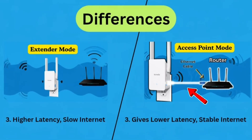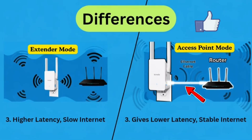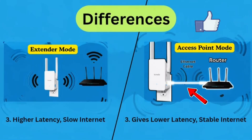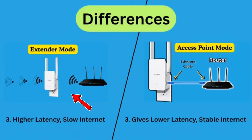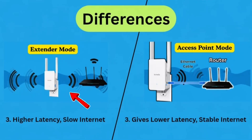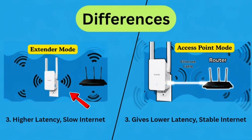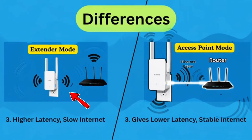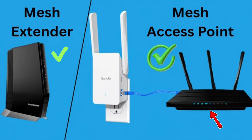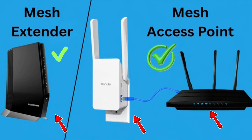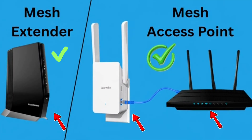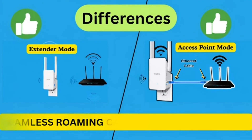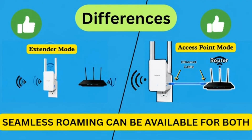Third, access point mode gives you lower latency and more stable internet, whereas extender mode provides higher latency and slower internet, especially through walls. Fourth, depending on the primary router and extender compatibility, seamless roaming can be available in both modes.